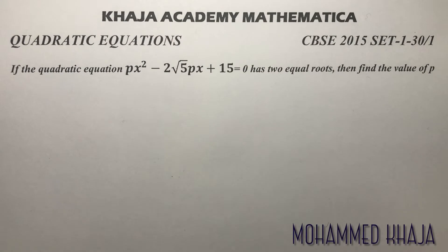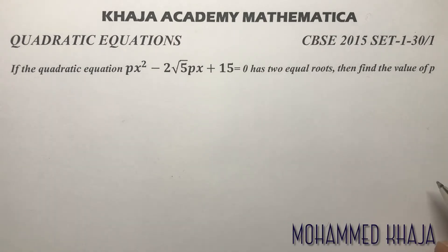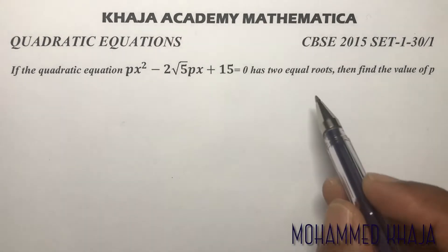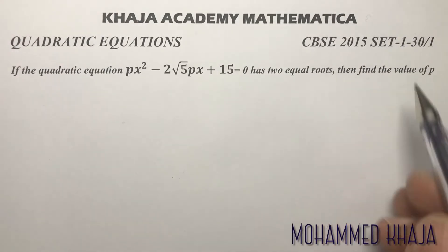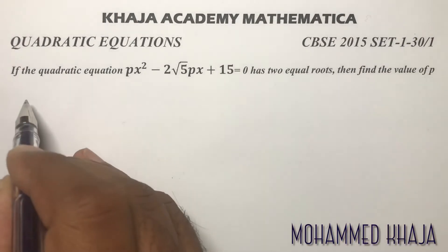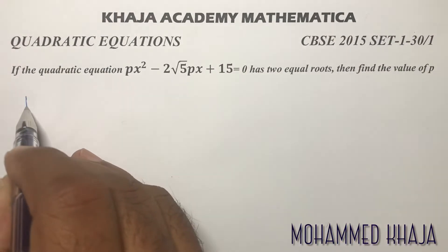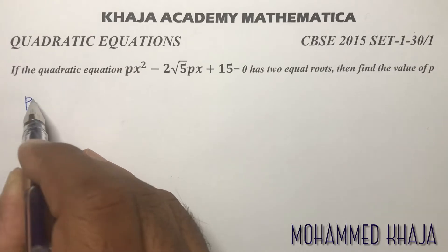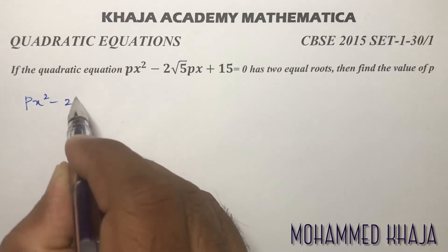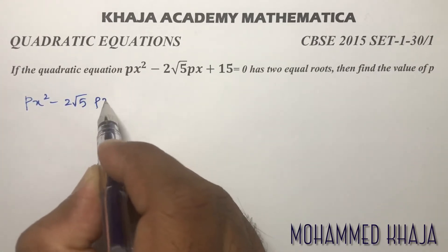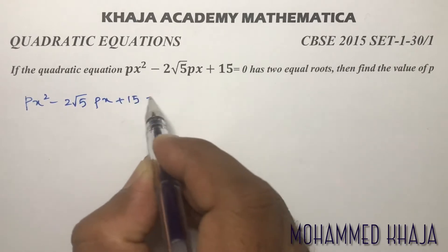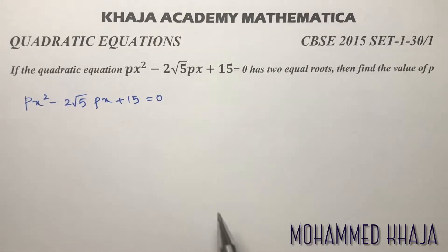If the quadratic equation px² minus 2√5·px plus 15 equals 0 has two equal roots, then find the value of p. So here the quadratic equation is px² minus 2√5·px plus 15 equals 0.